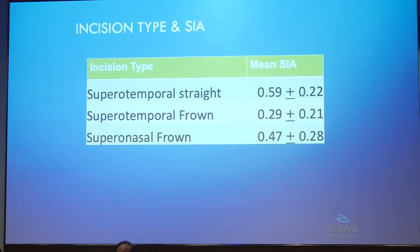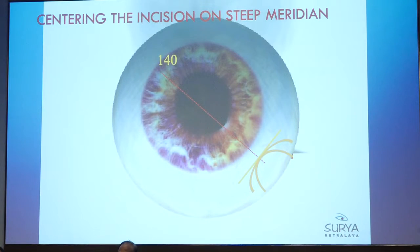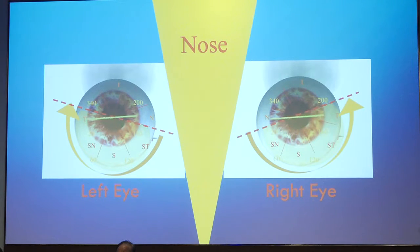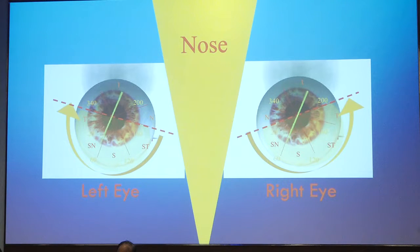Superonasal and supertemporal incisions behave between superior and temporal. To have a better effect on a steep meridian, you must place the incision on the steep meridian, regardless of shape and size, so vector forces act equally on both sides. Whatever the steep meridian, you can operate inferotemporal or slightly superonasal. SIA software can help calculate your own induced astigmatism by testing one type of incision in one meridian.